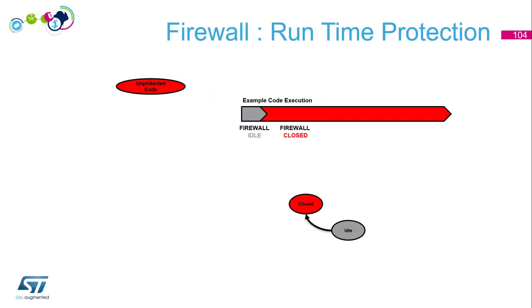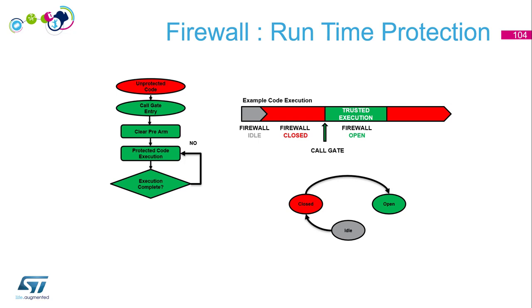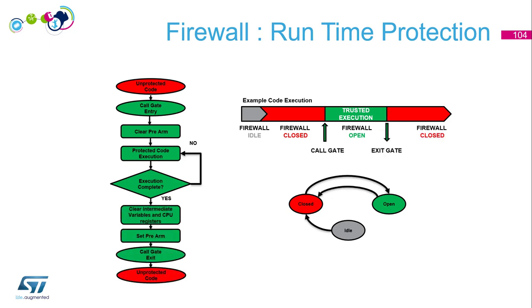Firewall runtime protection: when we boot, the firewall is in idle state — not configured. The first step is to configure the firewall, define the different segments, then activate it. Once activated, the firewall is first closed, meaning you can't access the protected segments. When you want to execute code behind the firewall, you need to call the gate entry, located at the beginning of the code segment. Once we call the call gate, the firewall is open and we can execute the code and access all the protected data. When the protected code execution is finished, we clear all intermediate variables and CPU registers, then call the call gate exit, and the firewall is closed again.